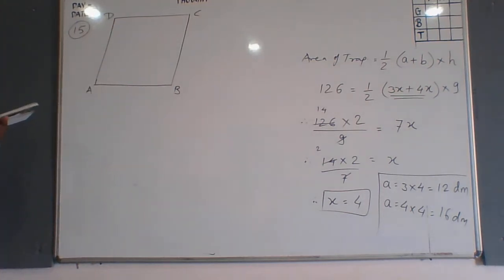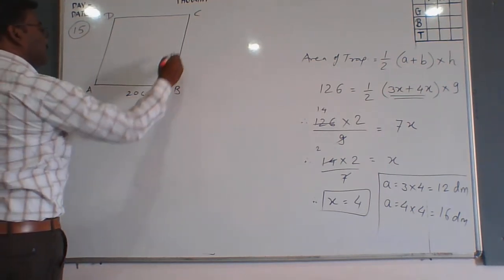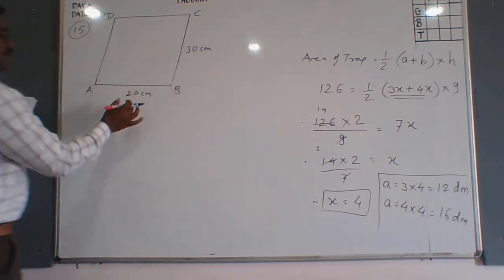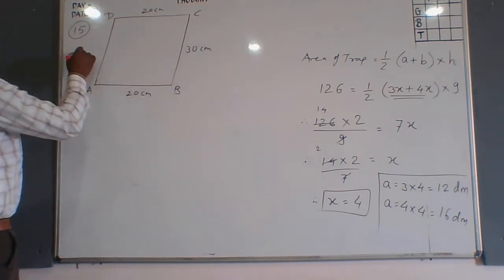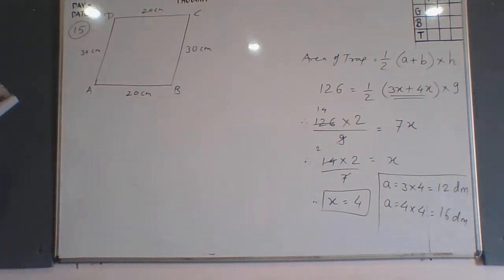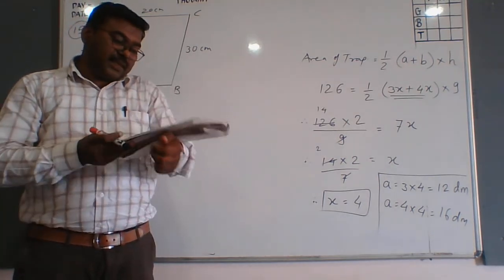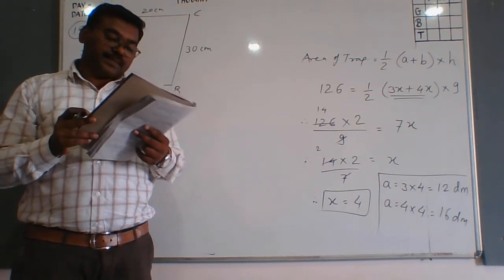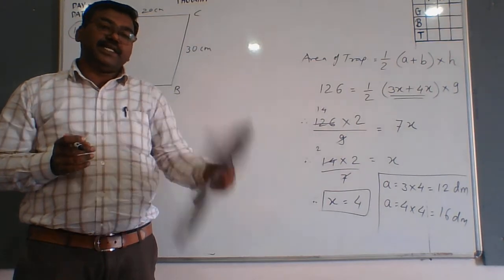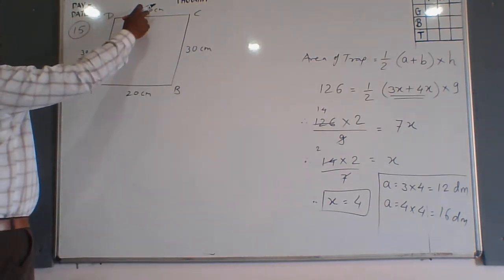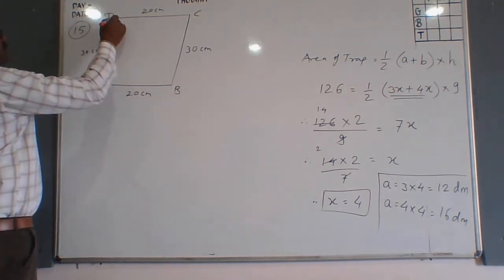The sides given are 20 cm and 30 cm. Since it is a parallelogram, opposite sides are equal — so if one side is 20 cm, the opposite side is also 20 cm, and if one side is 30 cm, the opposite side is also 30 cm. The distance between the shorter sides is 15 cm, and those are the 20 cm sides.